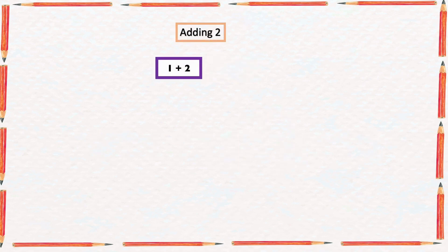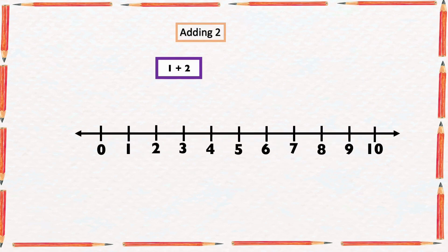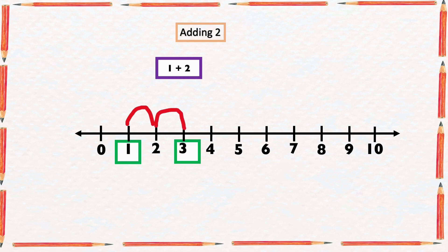In this example it says 1 plus 2. To find the sum of 1 and 2, we are going to use a number line. We are going to start from number 1 and count 2 numbers forward: 1, 2. The arrow ended at 3. So the sum of 1 and 2 is equal to 3.